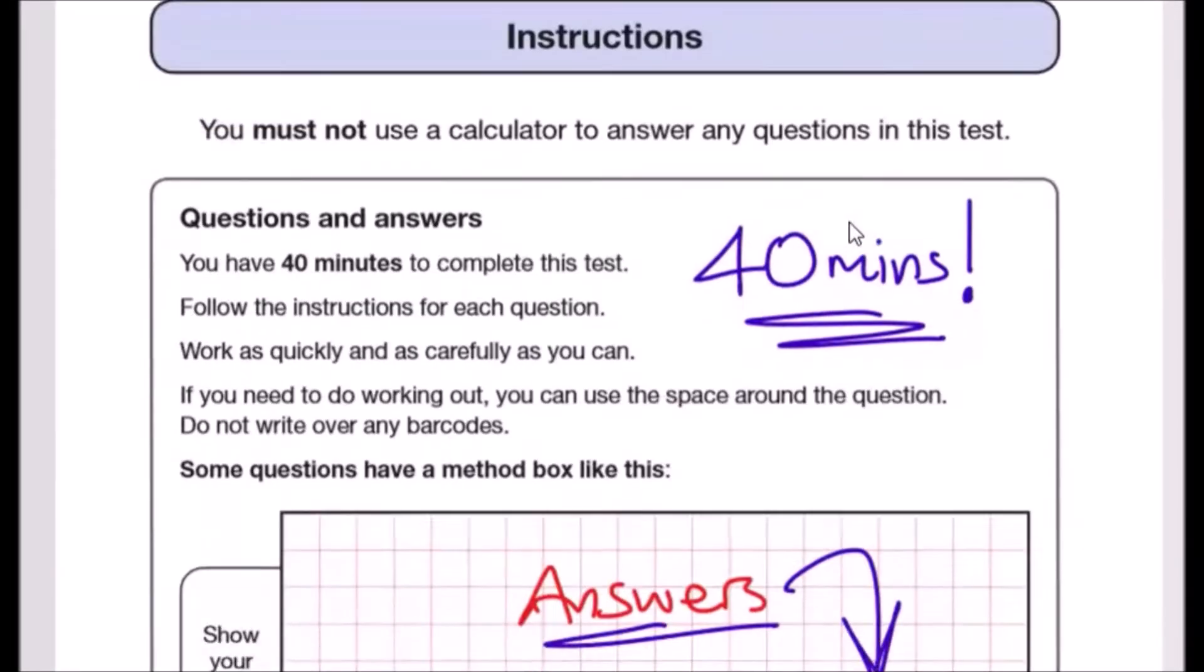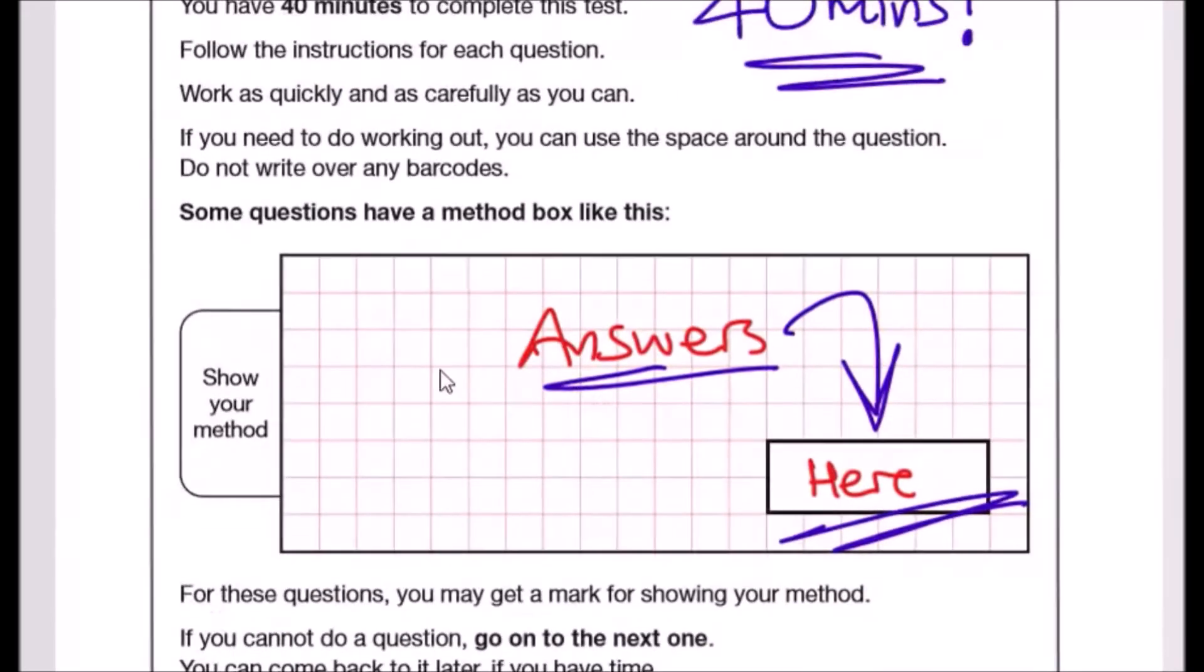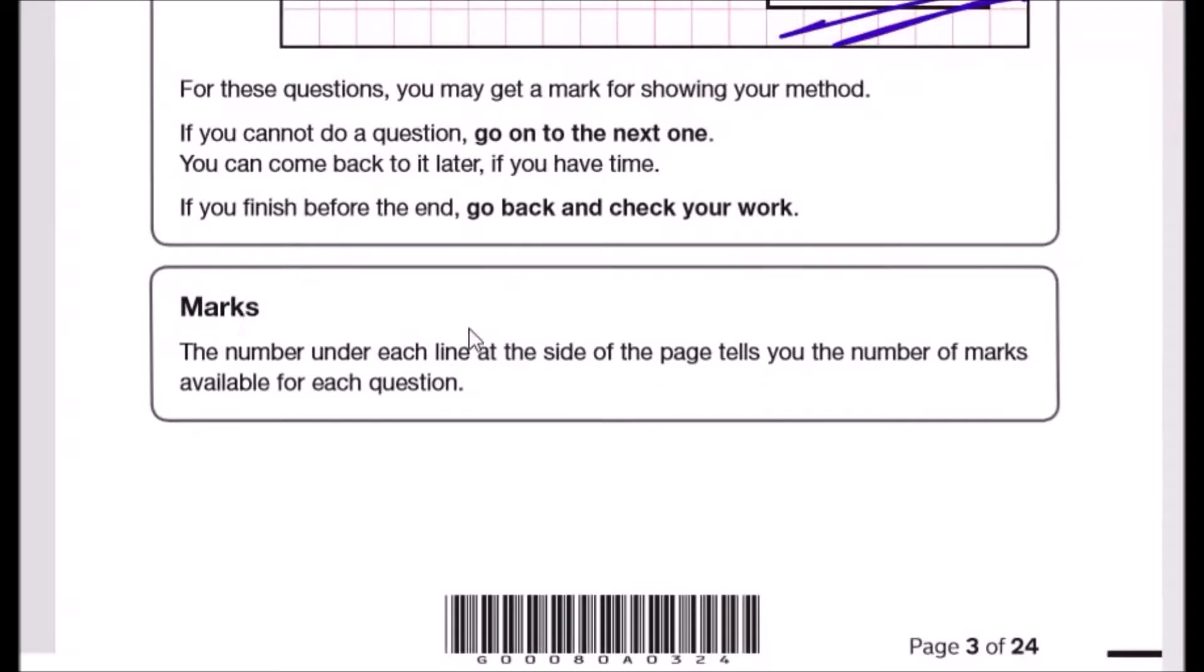As usual, you cannot use any calculator for any Key Stage 2 maths tests. You've got 40 minutes to answer, and every answer, at least your final answer, must be in a white box. You can show your working out in these squares here. Marks are given, but otherwise let's start with question one.